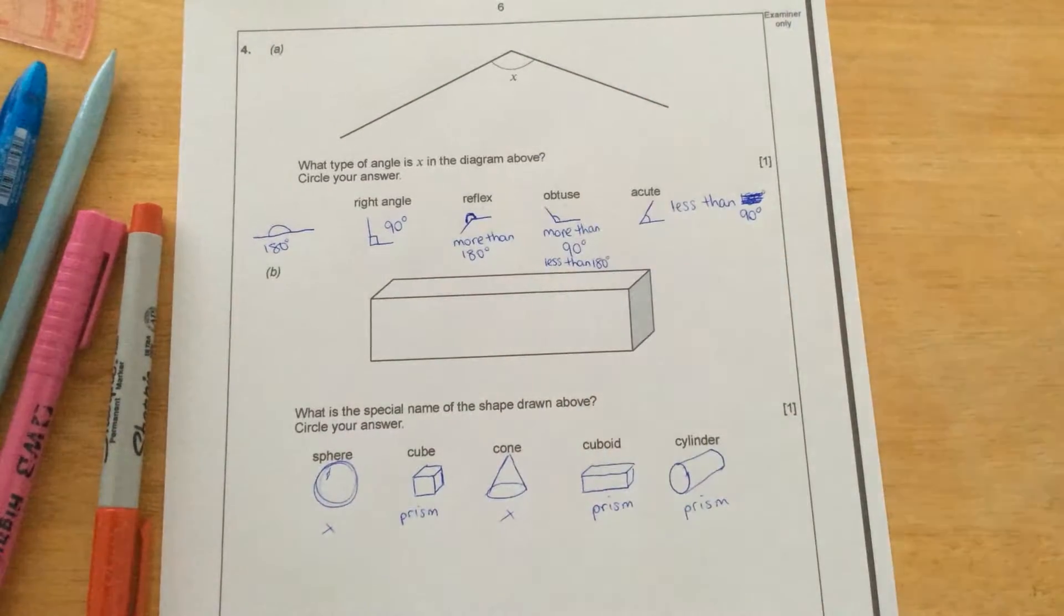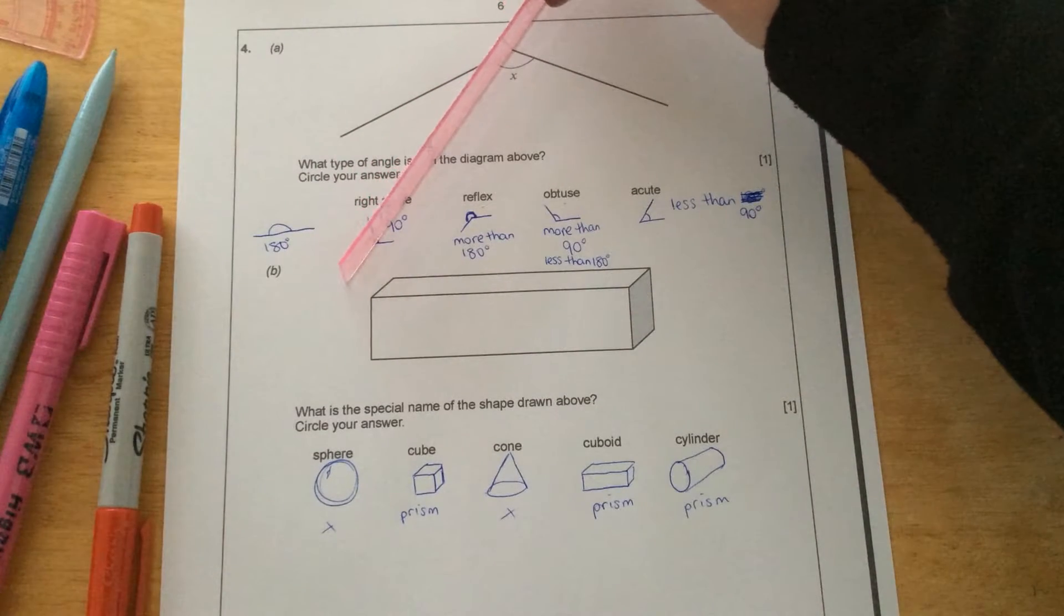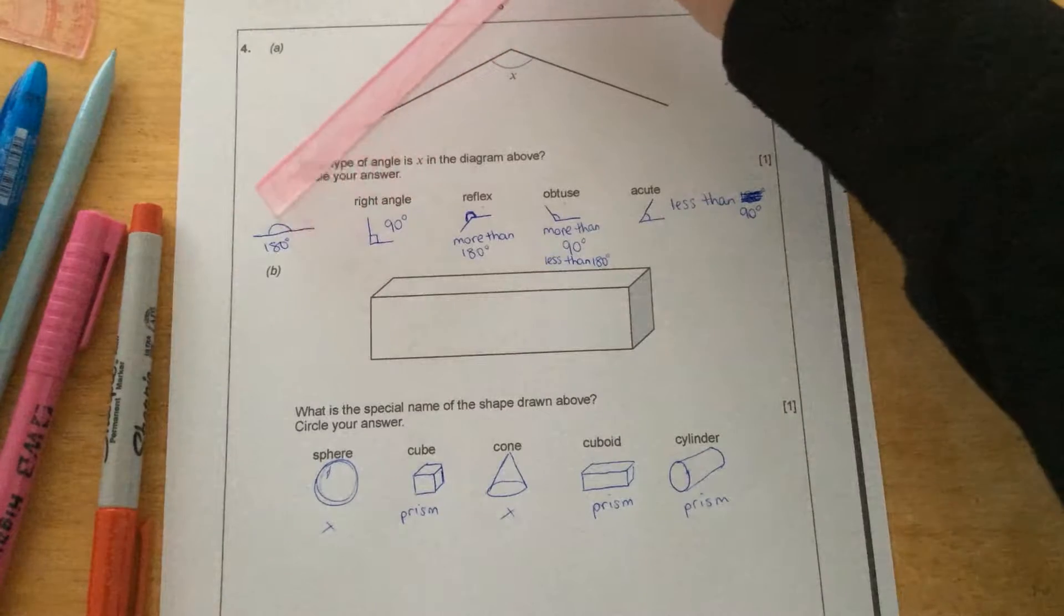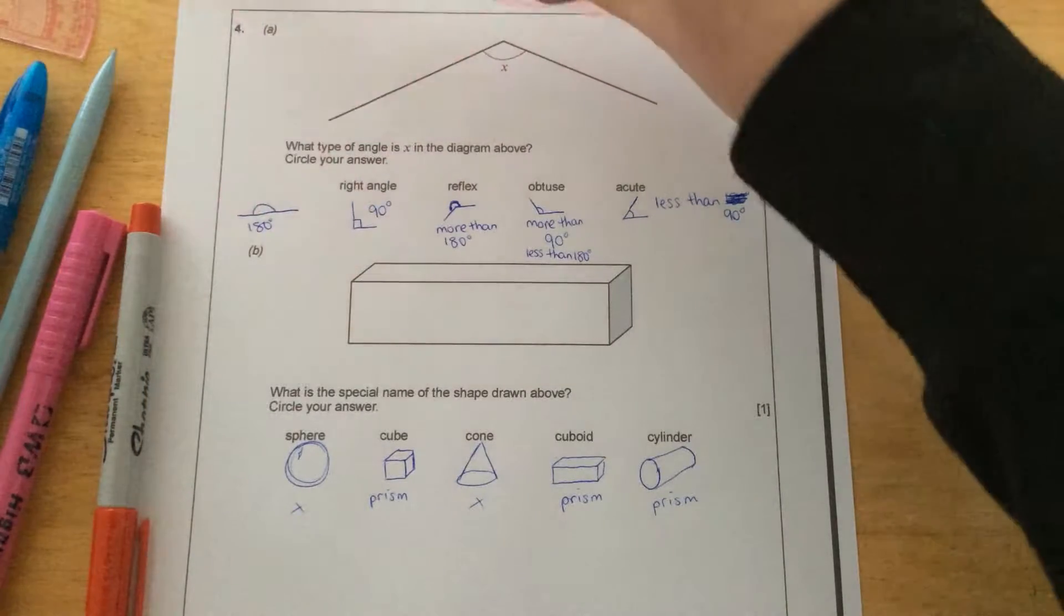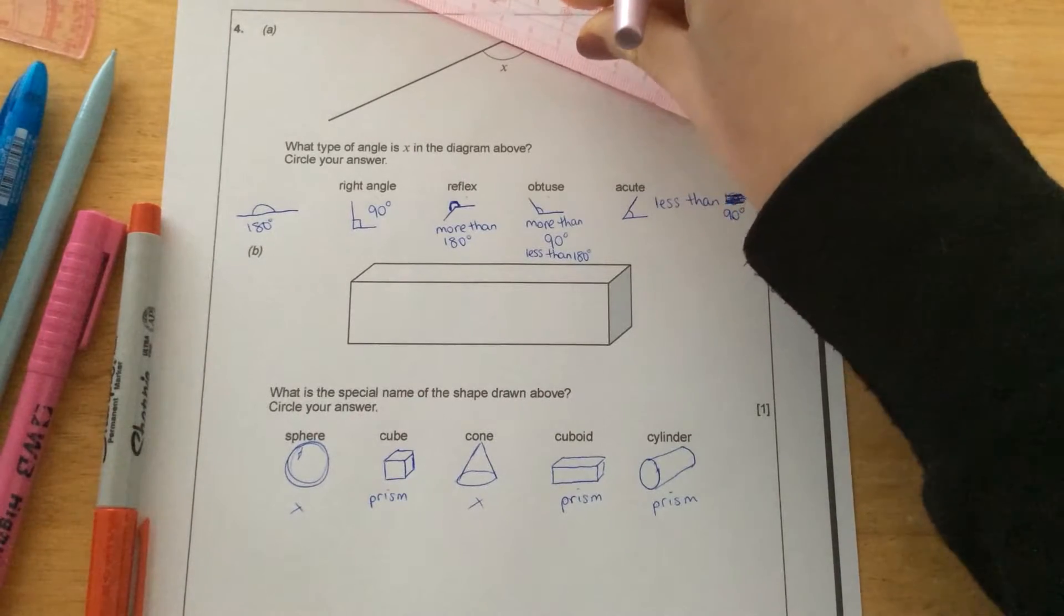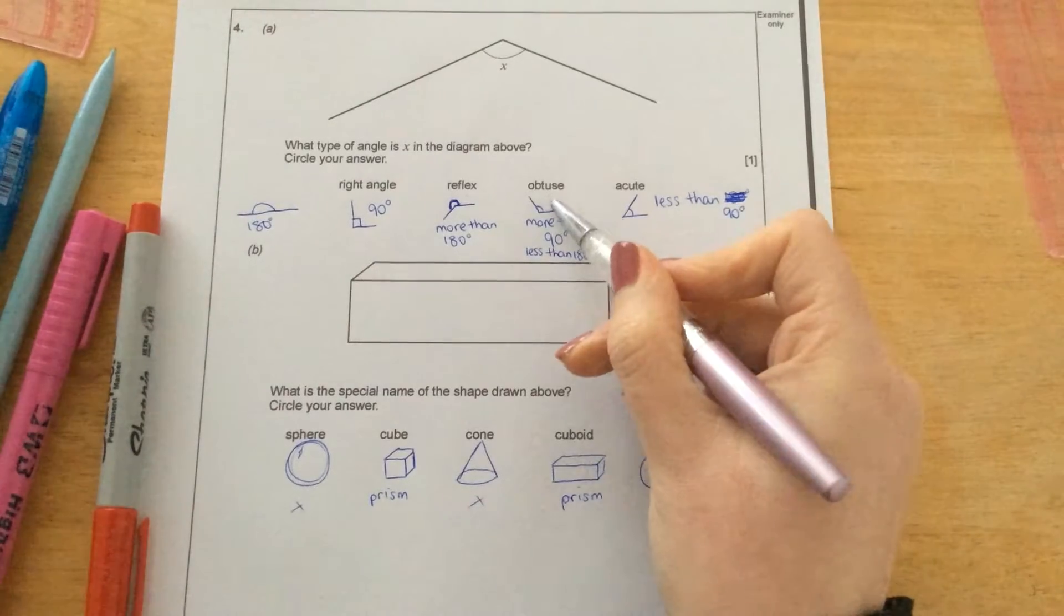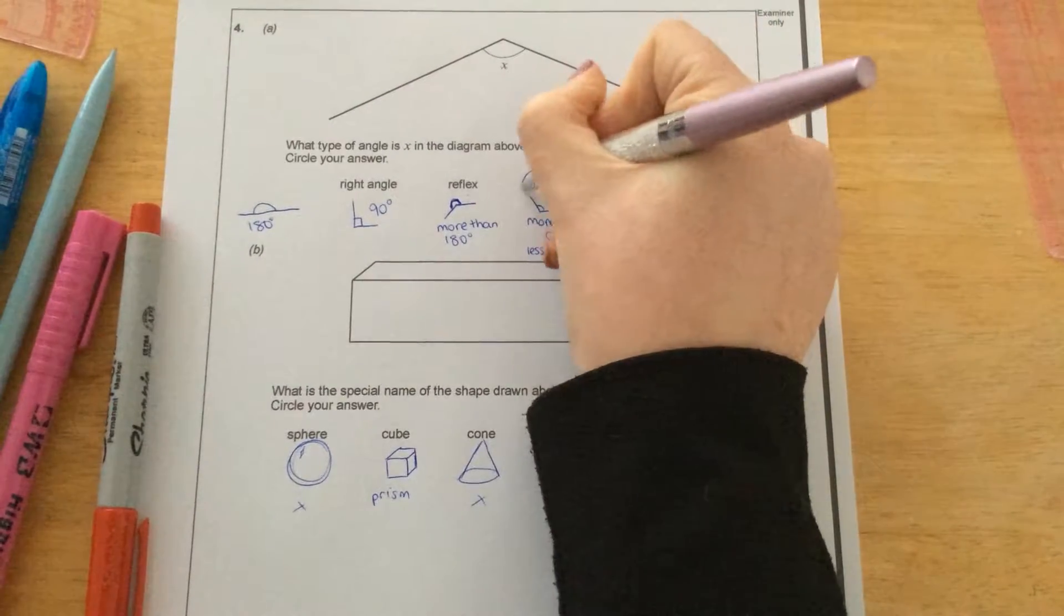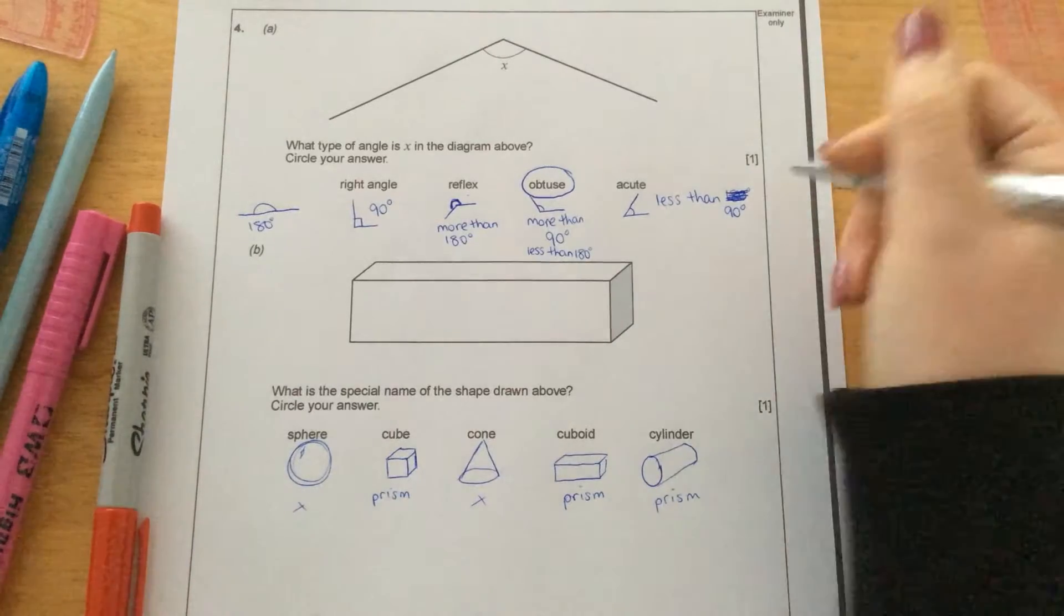So this one here, if it was to be 90 degrees, my line would be somewhere like this. But it's not, it's bigger, so that's going to be more than 90 degrees, but this would be 180. So it's more than 90 but less than 180. So that one there is the obtuse angle, it's the big angle, for one mark.